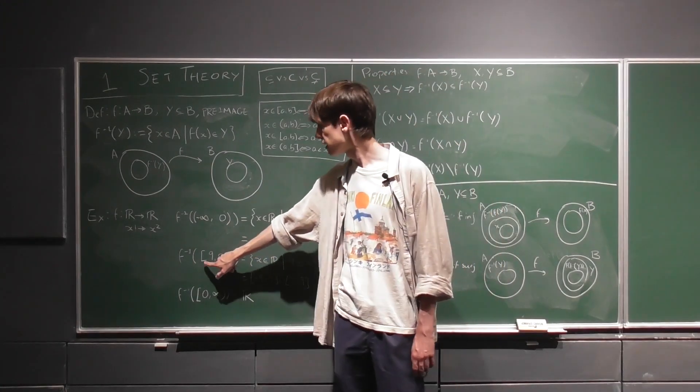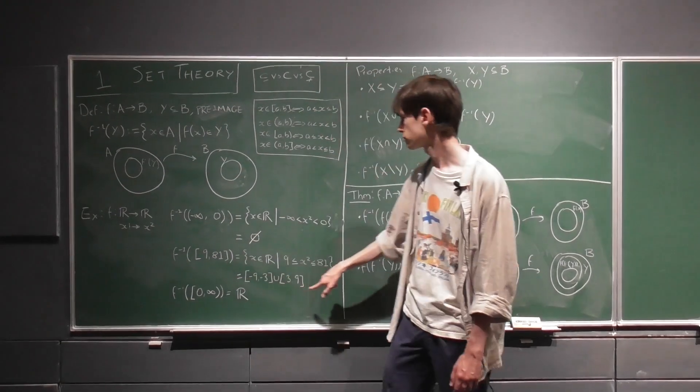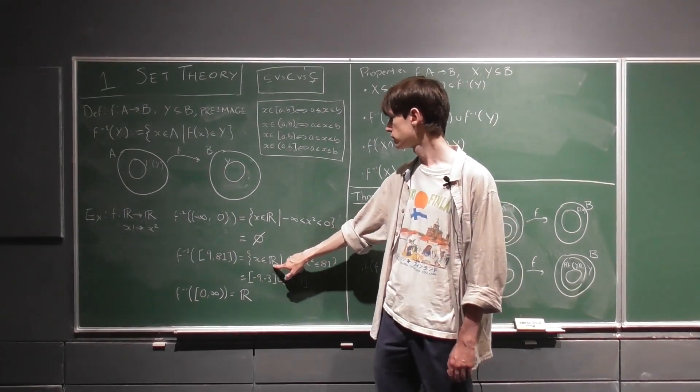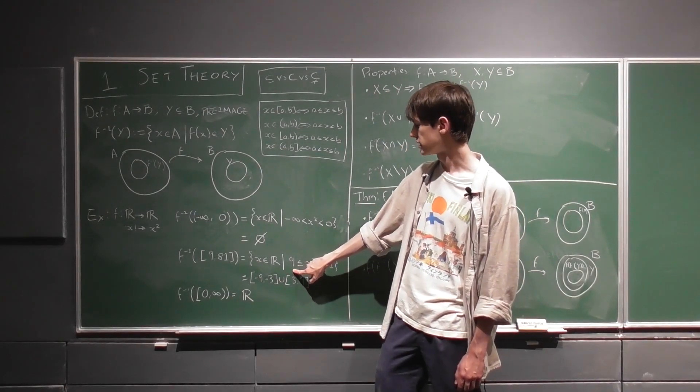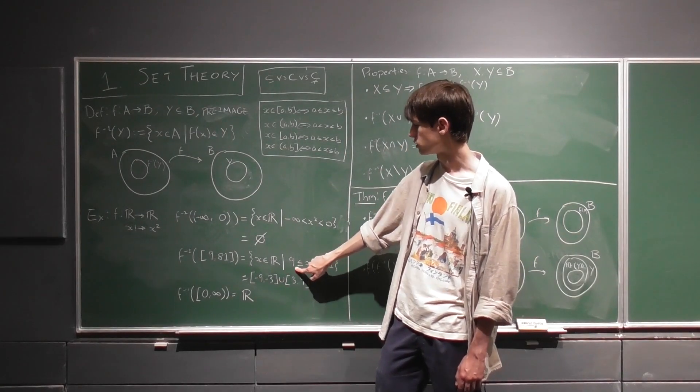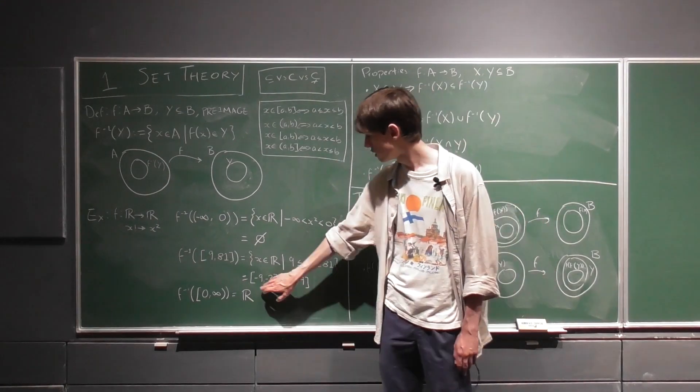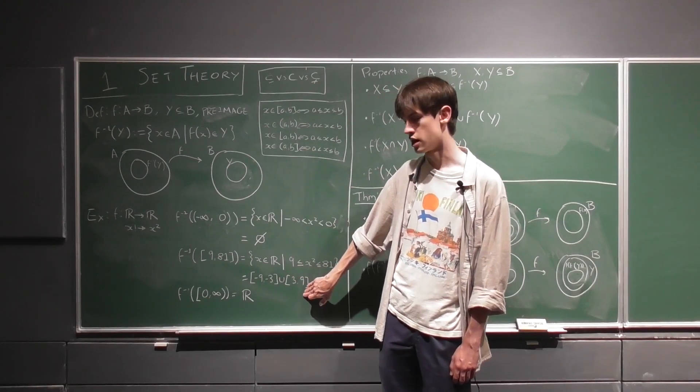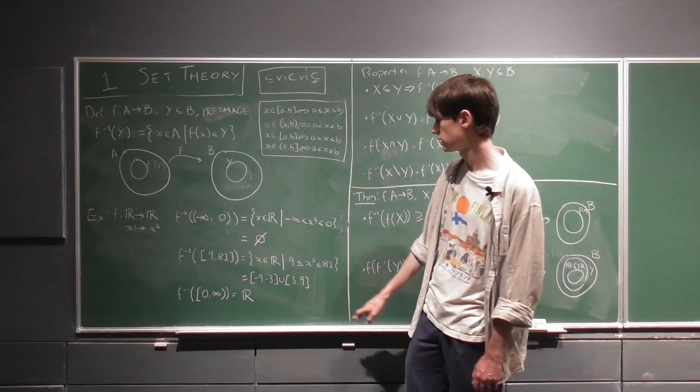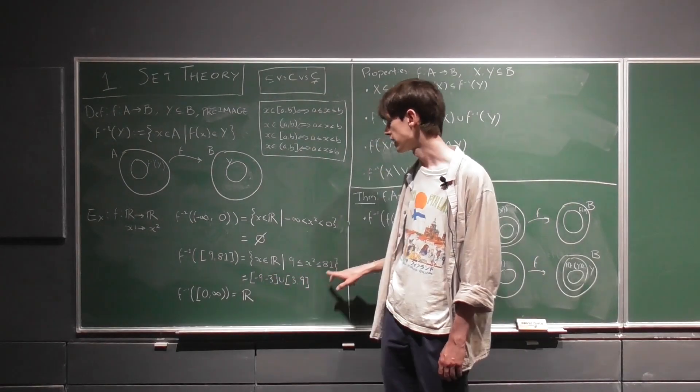What about this interval here from 9 to 81? Well that's all the numbers, real numbers, such that x squared is less than or equal to 81 or greater than or equal to 9. And that is the union of two intervals here, minus 9 to minus 3 and 3 to 9.